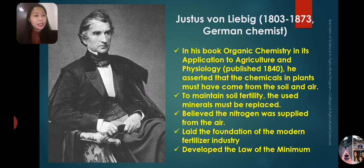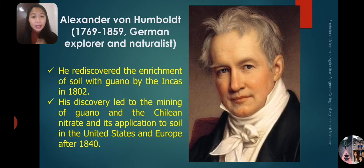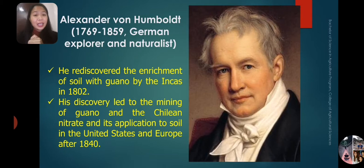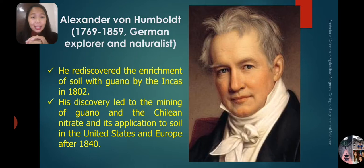Alexander von Humboldt was a German explorer and naturalist who existed from 1769 to 1859. He rediscovered the enrichment of soil with guano by the Incas in 1802. His discovery led to the mining of guano and Chilean nitrate and their application to soils in the United States after 1840. He showed that guano was really very important in soil fertility during that time.